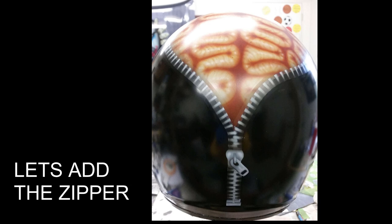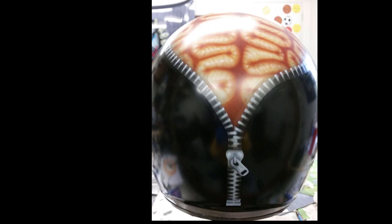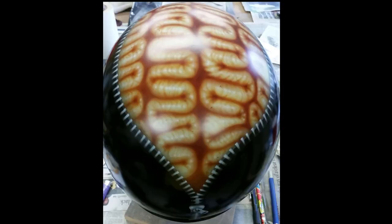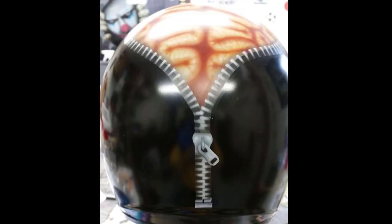So the zipper was very tedious. I masked it off with transfer tape and cut each individual tooth out. So this step took some time and it was very tedious. Then I went back in with some white and I used some freehand to do each tooth. Then I added the pull.